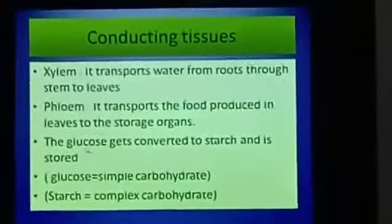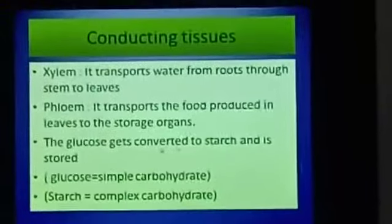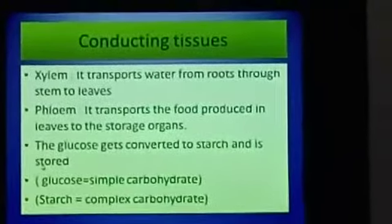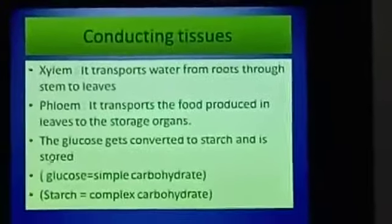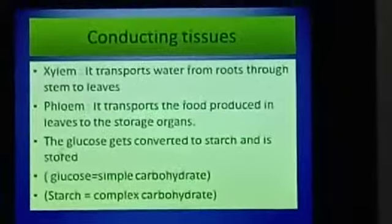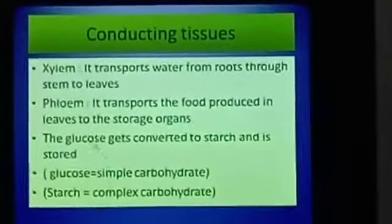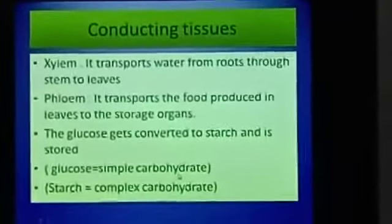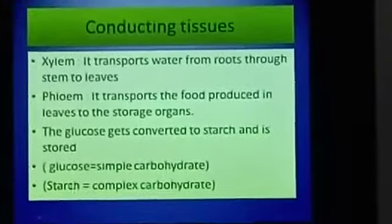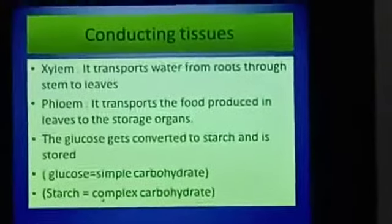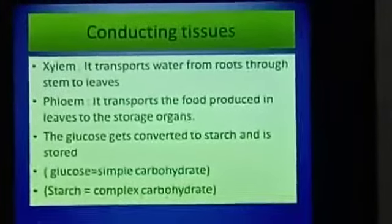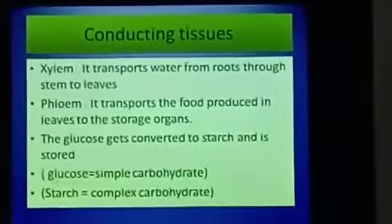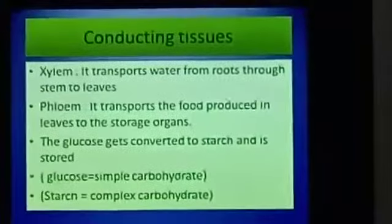The glucose gets converted to starch and it is stored. Both glucose and starch are carbohydrates. Glucose is a simple carbohydrate, whereas starch is a complex carbohydrate formed by the joining of glucose molecules.